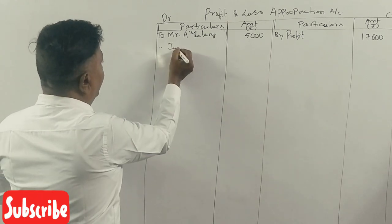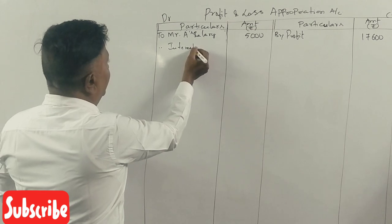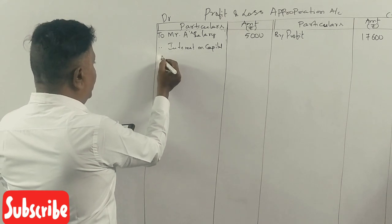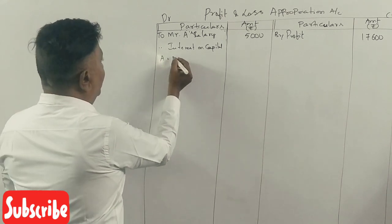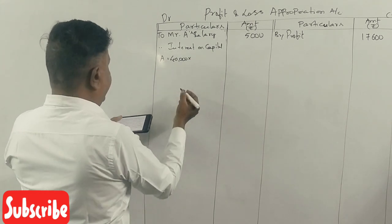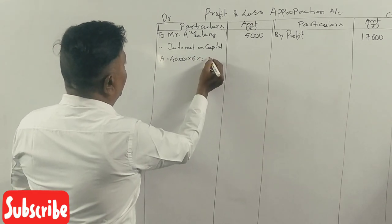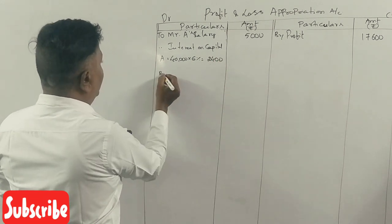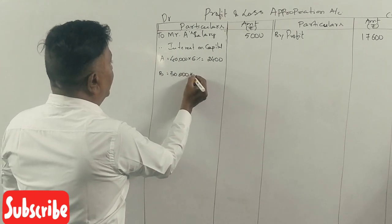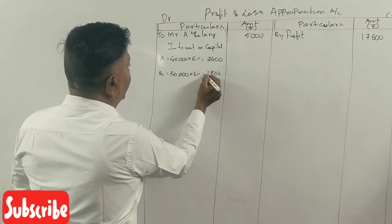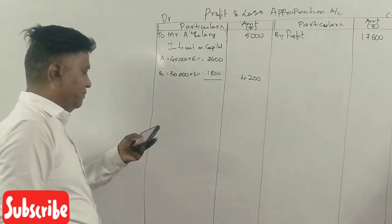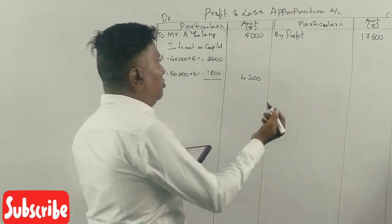Interest on capital: A's capital is Rs. 40,000, so 6% of 40,000 is Rs. 2,400. B's capital is Rs. 30,000, so 6% of 30,000 is Rs. 1,800. Total Rs. 4,200.